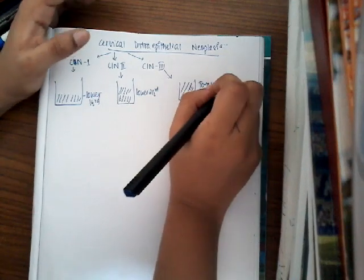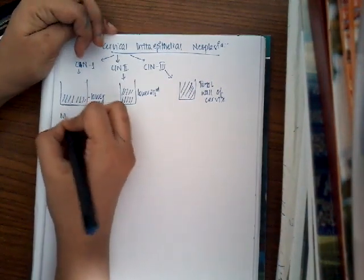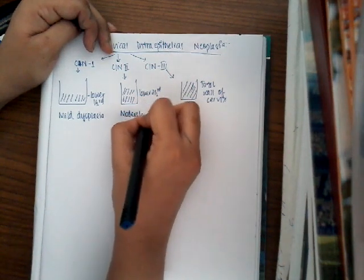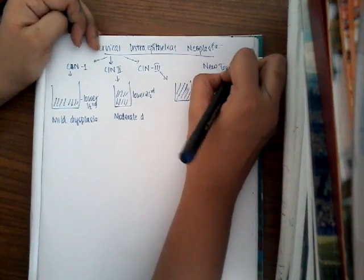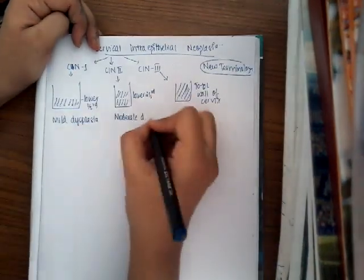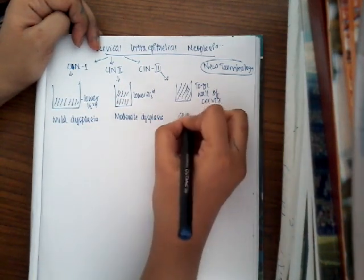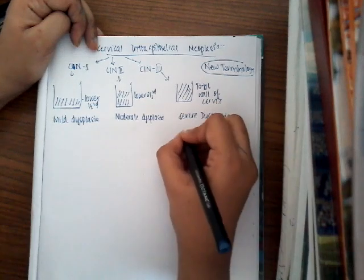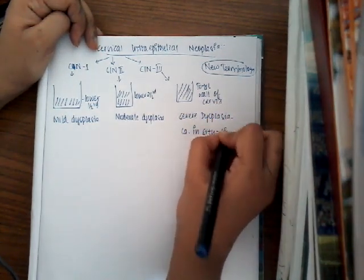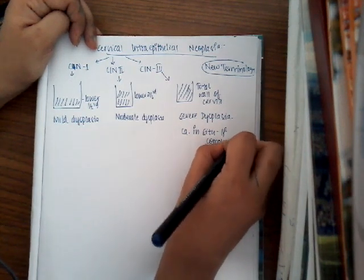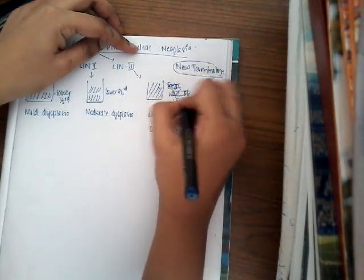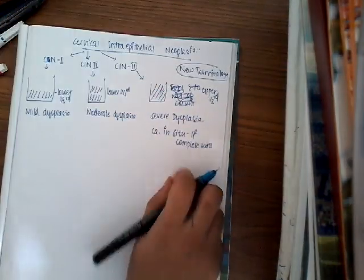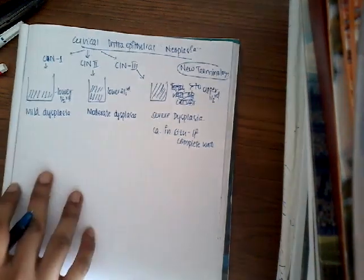CIN 1 is also called mild dysplasia, CIN 2 is called moderate dysplasia, and CIN 3 is called severe dysplasia — these are older terminologies. If the entire wall is involved, it can also be called carcinoma in situ. For CIN 3, the involvement must extend to the upper one-third; even if not totally involved, as long as it spreads to the upper one-third it is classified as CIN 3.